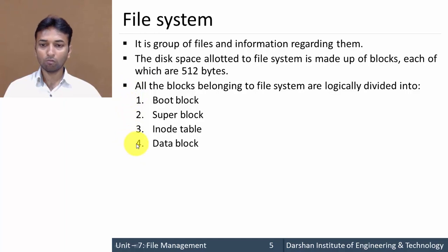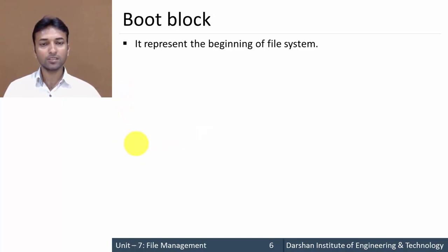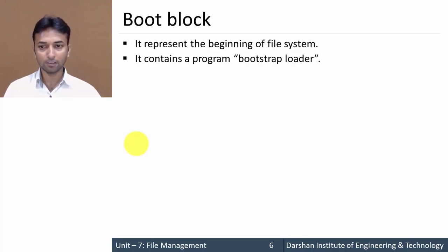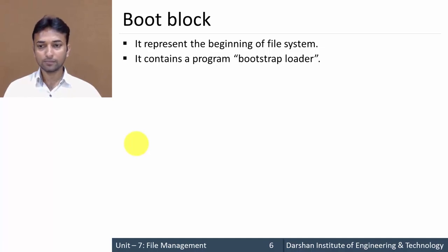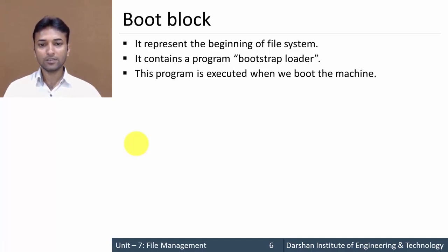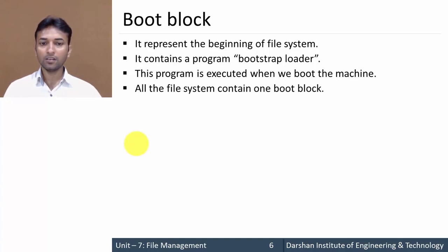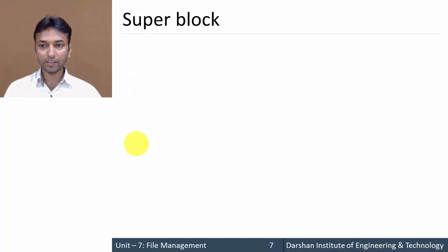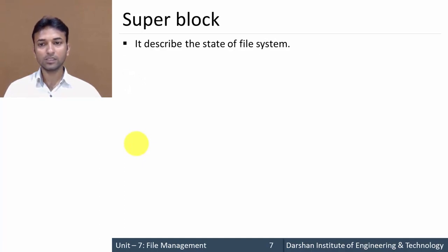The first category is the boot block. It represents the beginning of the file system and contains a program known as the bootstrap loader, which loads our operating system. This program is executed when we boot or start our machine, and all file systems contain one boot block.